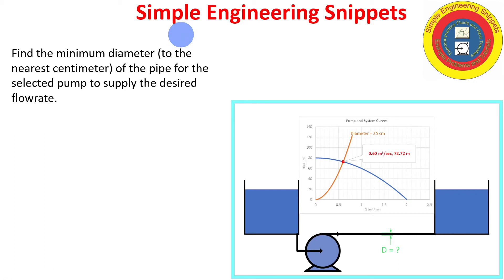Welcome to another Simple Engineering Snippet. In this instructional video we work an example where we determine the pipe diameter that provides the desired flow rate for the supplied pump. I hope you find it useful.